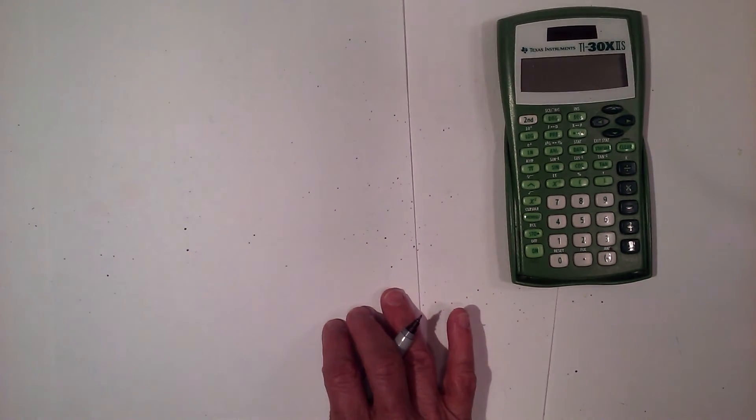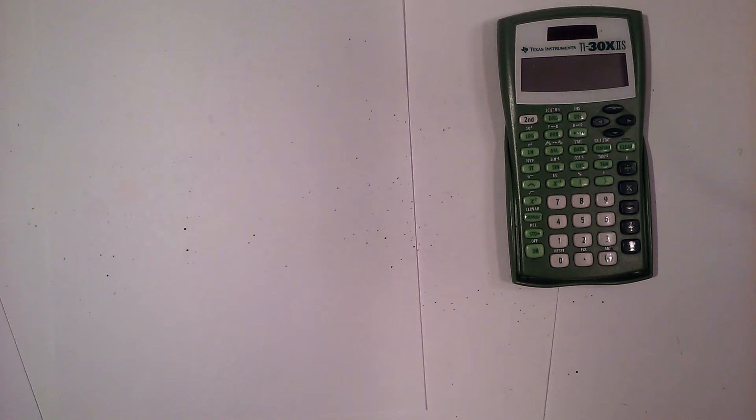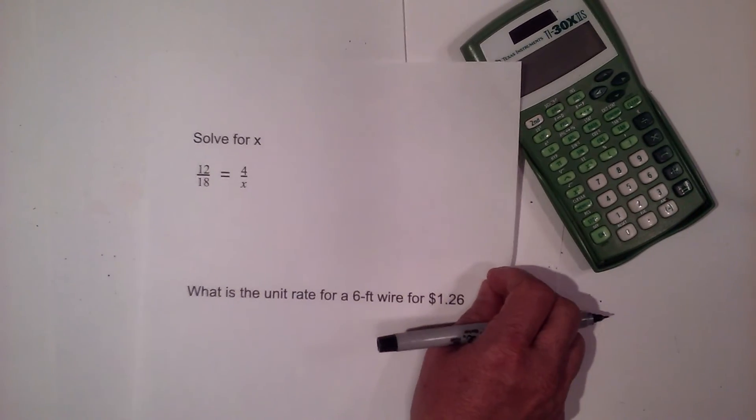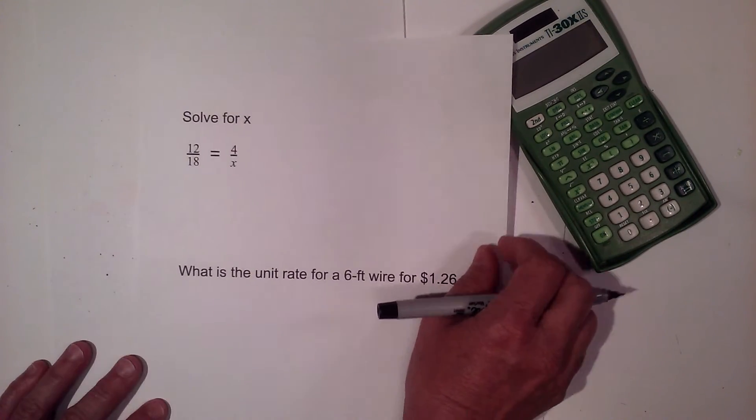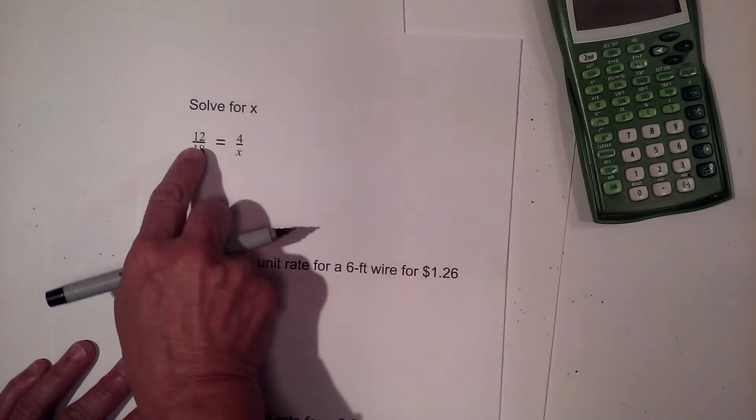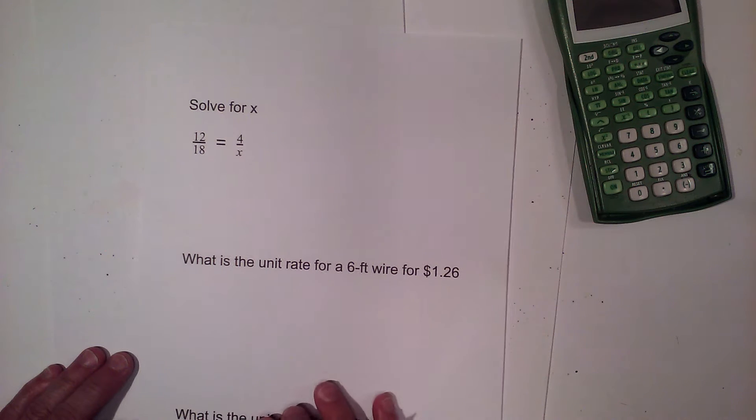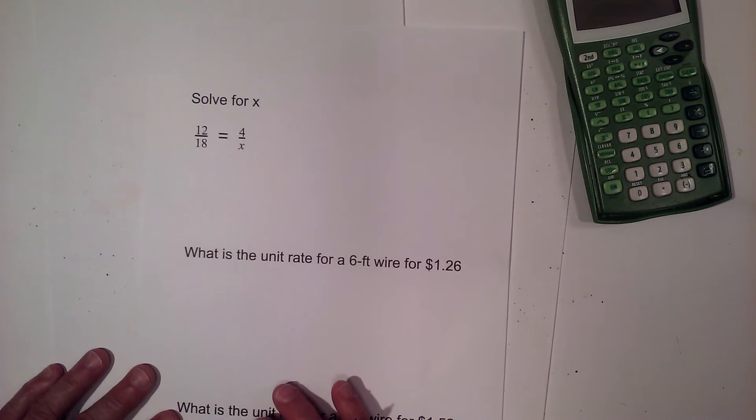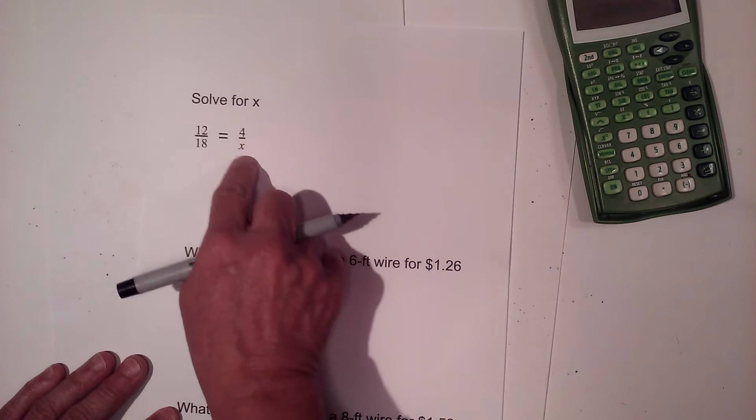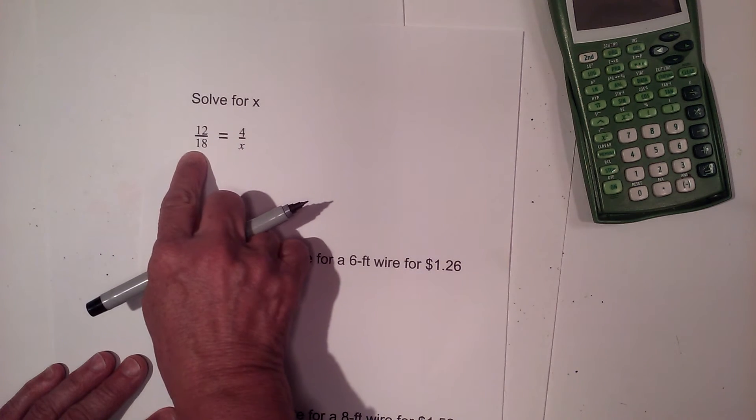Let's look at the next part. The next part we are solving for x. We have a proportion. Now in proportions, what we're going to do is, you've got two methods to do this. I'm going to go ahead and do it as an equation. When you have a proportion equal to another proportion, you can cross multiply and set them equal.